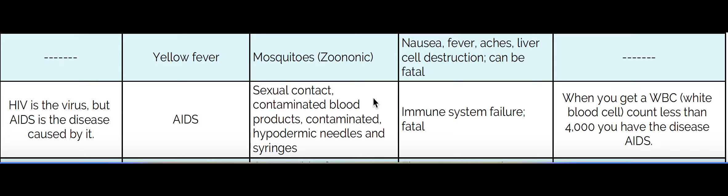HIV is an emerging virus because it showed up on the scene somewhere between 1982 and 1985 — if asked, just give 1985. It was originally transferred through a monkey. Monkeys are primates, and so are you, so for it to jump species is not that big of a deal.